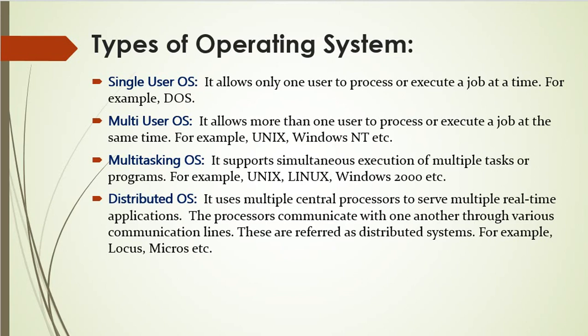Multi-tasking operating system supports simultaneous execution of more than one task at the same time. Examples are Linux, Unix, and Windows operating system. Next we have the distributed operating system, which uses multiple central processors to serve multiple real-time applications and multiple users at the same time. We use the distributed operating system to perform data processing jobs. Examples of distributed operating systems are low-cost and micros.